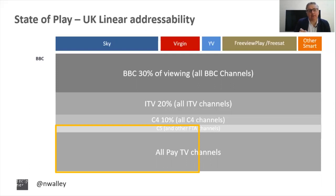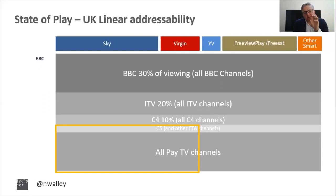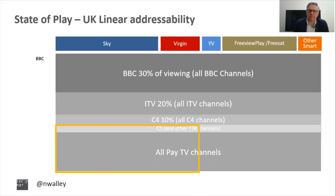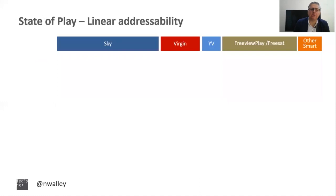Addressability is only being delivered currently around linear and other formats on Sky and Virgin. So when we look at linear addressability, the only available options represent about a fifth of the UK viewing landscape. We haven't included Channel 4 in that because it doesn't launch for another year on Sky Q. So in terms of linear, currently the landscape is very limited, and one of the key questions is how we can expand that potential landscape for addressability in the UK.